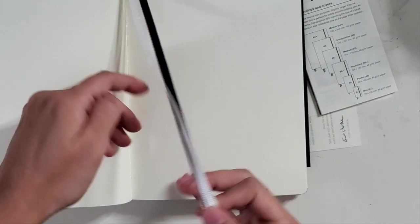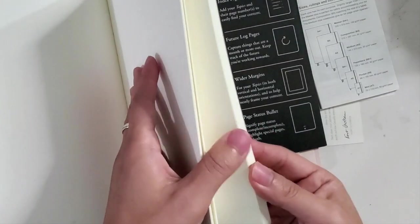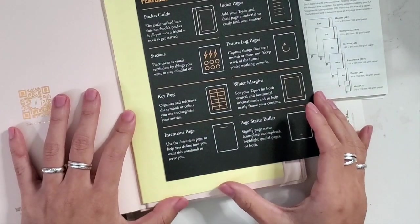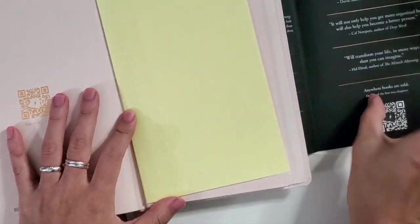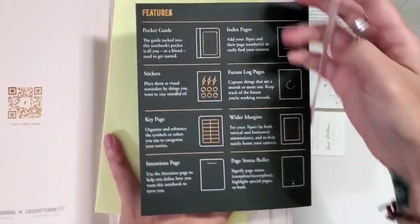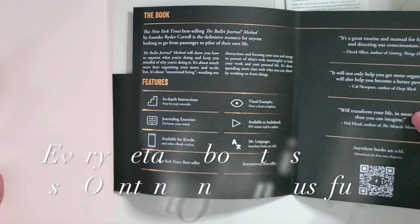And in the blush colored one, the three bookmarks. So those are all the pages. And then toward the back, we have the pocket guide. Oh, this jacket is just, it's got so much good stuff in it.